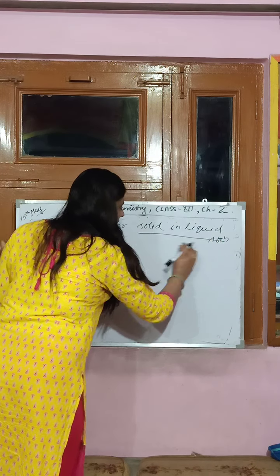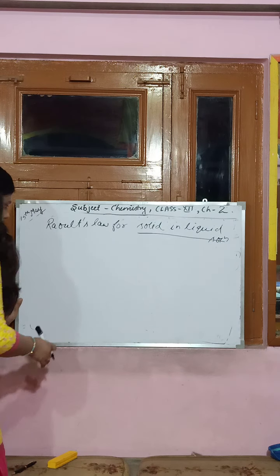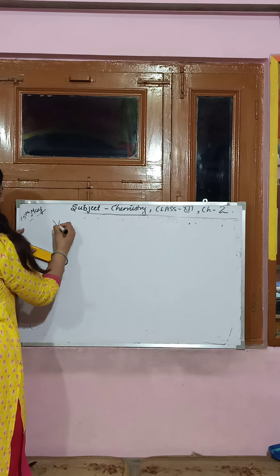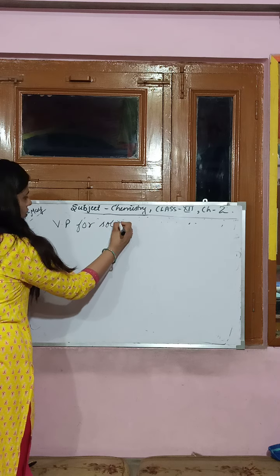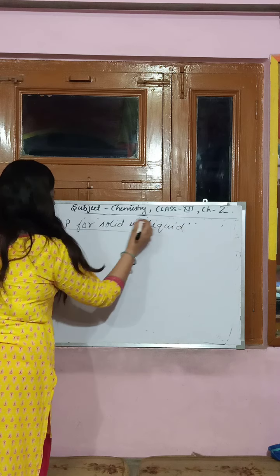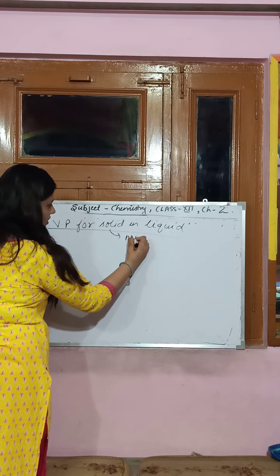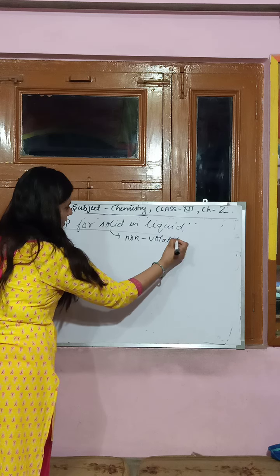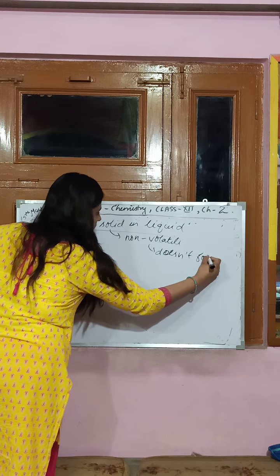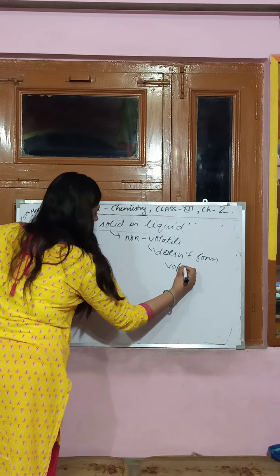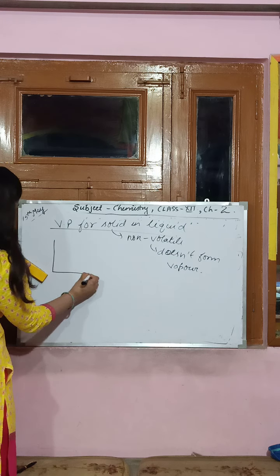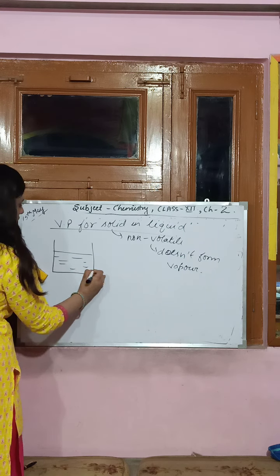Generally, when you add a solid solute to a liquid, the solute is non-volatile. Non-volatile means it does not form vapors. If I take a liquid like water and heat it, it forms vapors. That is the volatile component. But when I add a non-volatile solute into the liquid, that solute will not evaporate itself.